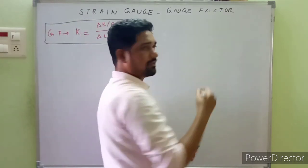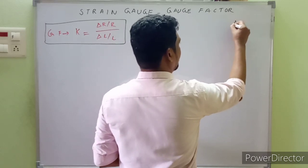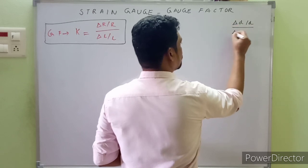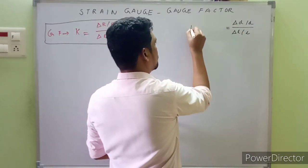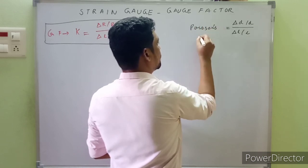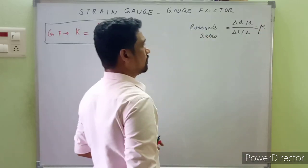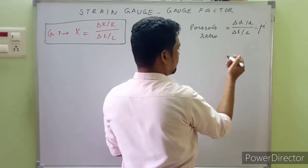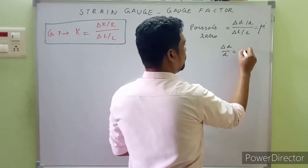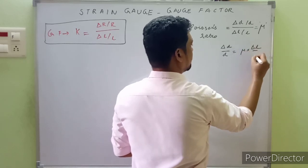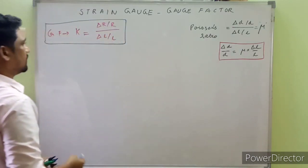From this discussion, we have another important ratio: the fractional change in diameter due to the fractional change in the length of the wire. This ratio is known as Poisson's ratio, denoted with the Greek letter μ. The important relationship is: δD/D = μ · δL/L, which we will plug into our derivation.